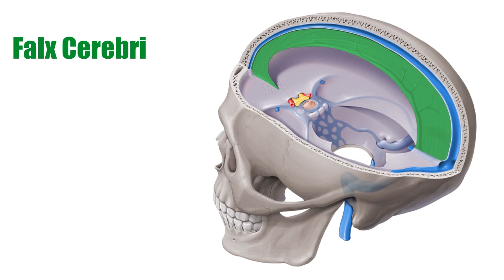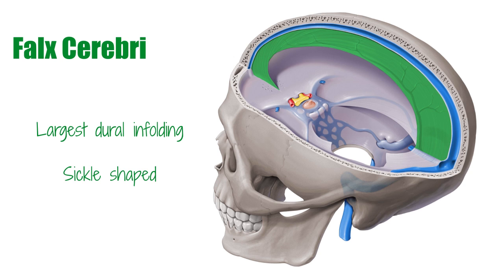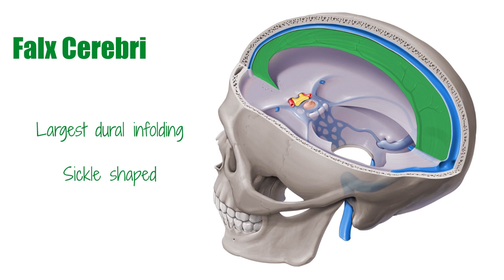The Falx cerebri, highlighted in green, is the largest dural infolding. It is sickle-shaped and lies at the midline between the two cerebral hemispheres, separating them. Anteriorly, the Falx cerebri is attached to the internal frontal crest and the crista galli. It is narrower in the front and broader in the back. Posteriorly, it blends with the upper surface of the tentorium cerebelli, highlighted here.